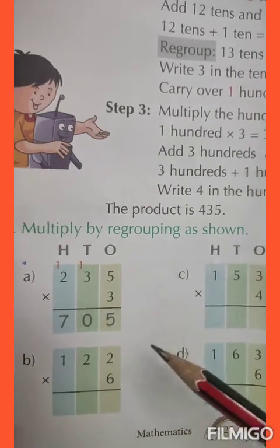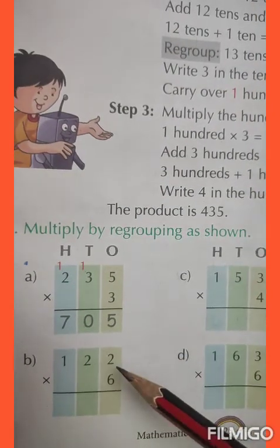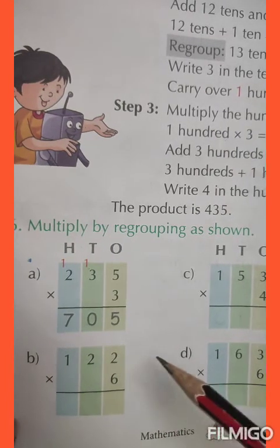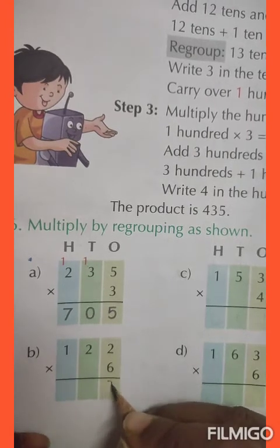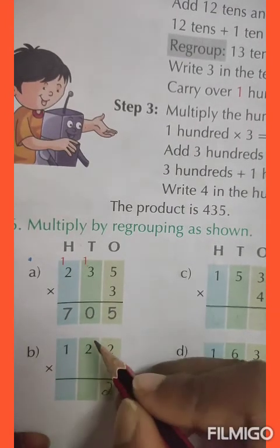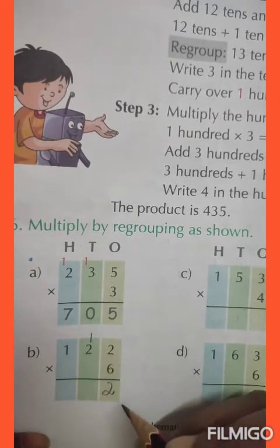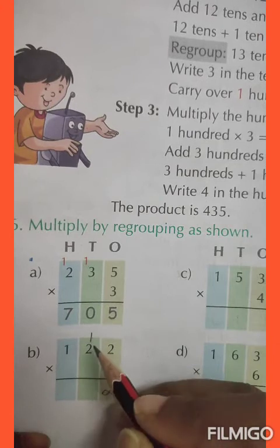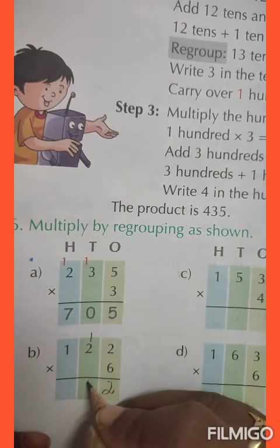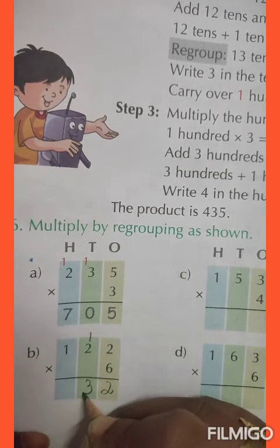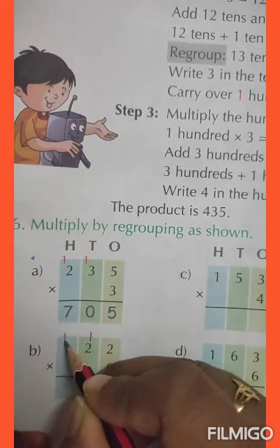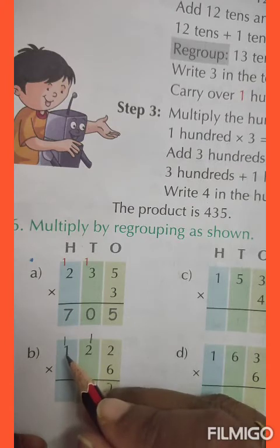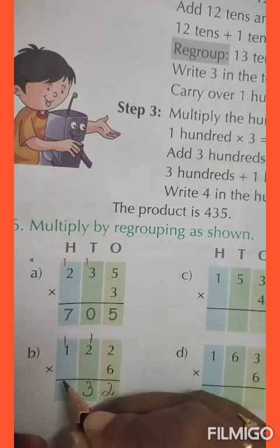Now number B: 122 into 6. 6 twos are 12, write 2 and then 1 is carried over. 6 twos are 12, 12 plus 1 is 13, so we will write 3 and then 1 is carried over. 6 ones are 6, and 6 plus 1 is 7.